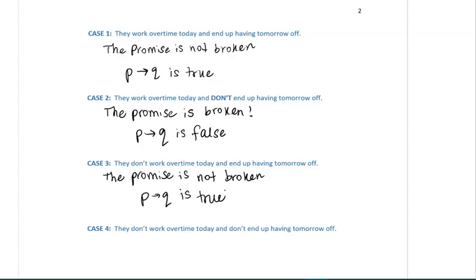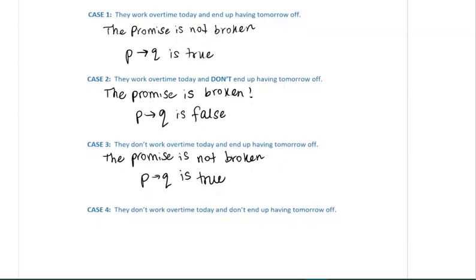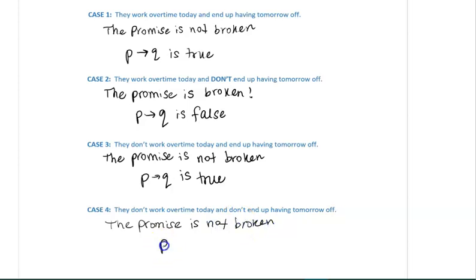Case four: they don't work overtime today and don't end up having tomorrow off. Again, in the original conditional statement, they are only promised something if they work overtime today. They are not promised anything if they don't work overtime today, so the promise is technically not broken here. Therefore, the conditional statement is true.